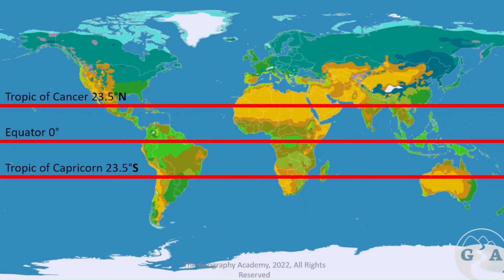We can see the earth is divided up into many different climate zones — deserts, tropical areas. We can see a couple of key lines: the equator, the Tropic of Capricorn, and the Tropic of Cancer. Inside those lines, 23 degrees north and south of the equator, is the tropics. Lines of latitude don't always explain the climate you're going to get — there can be multiple different climates in the same areas, like between India and Saudi Arabia.